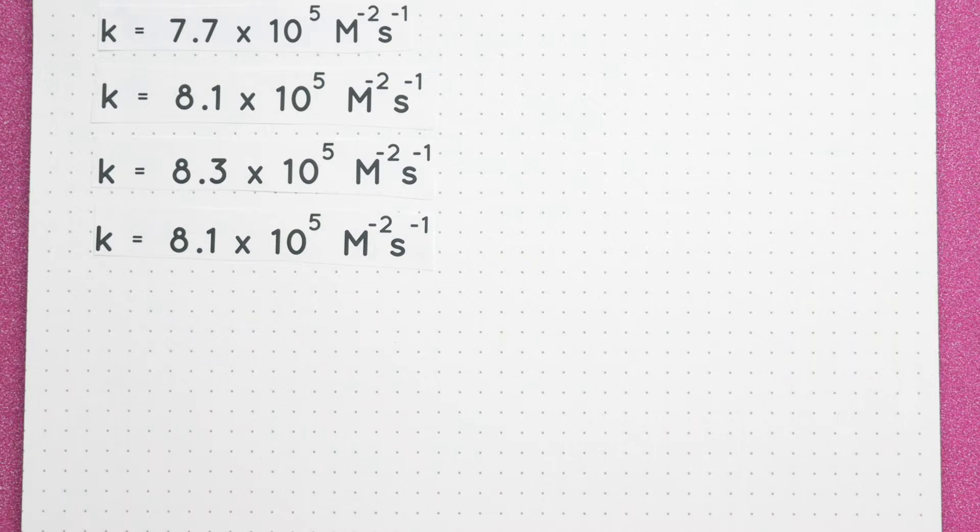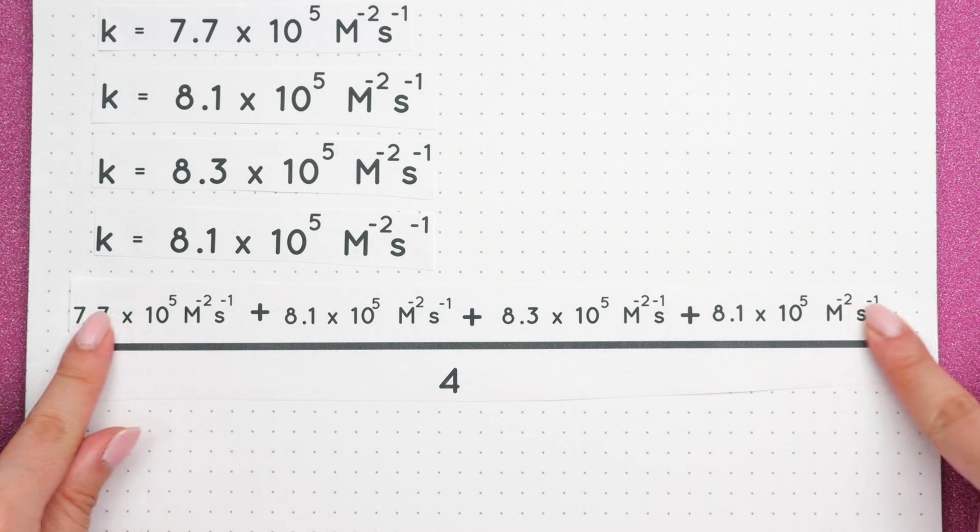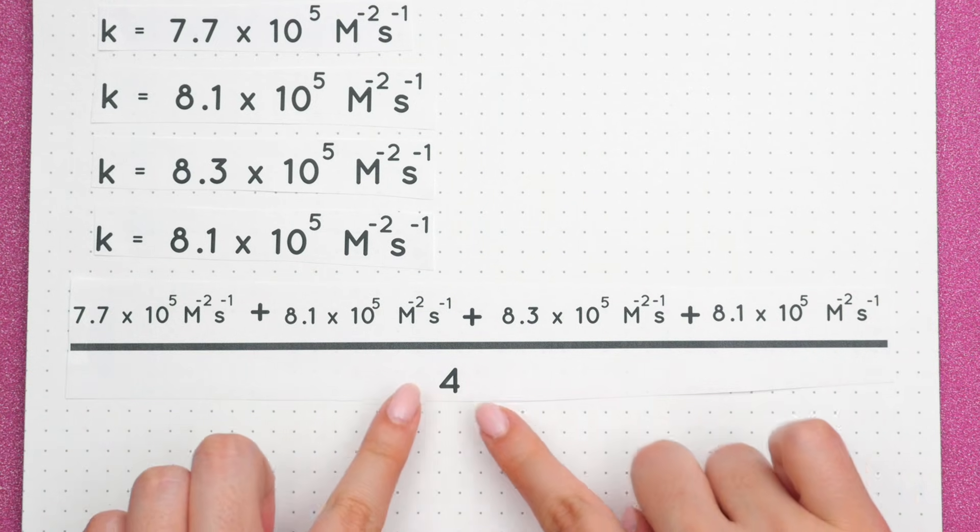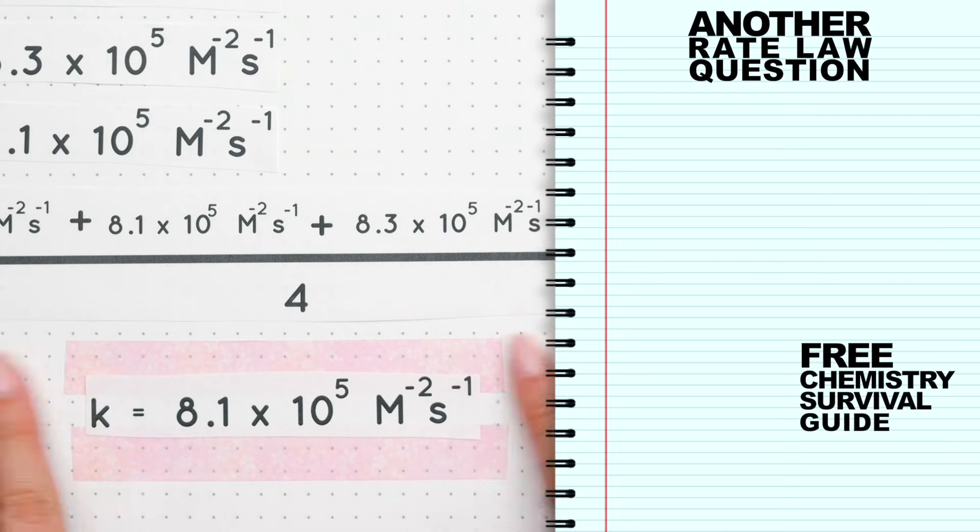These are the rate constants for each trial. Now find the average by adding all the rate constants together and divide by the total number of trials, which is 4. And this is our correct rate constant.